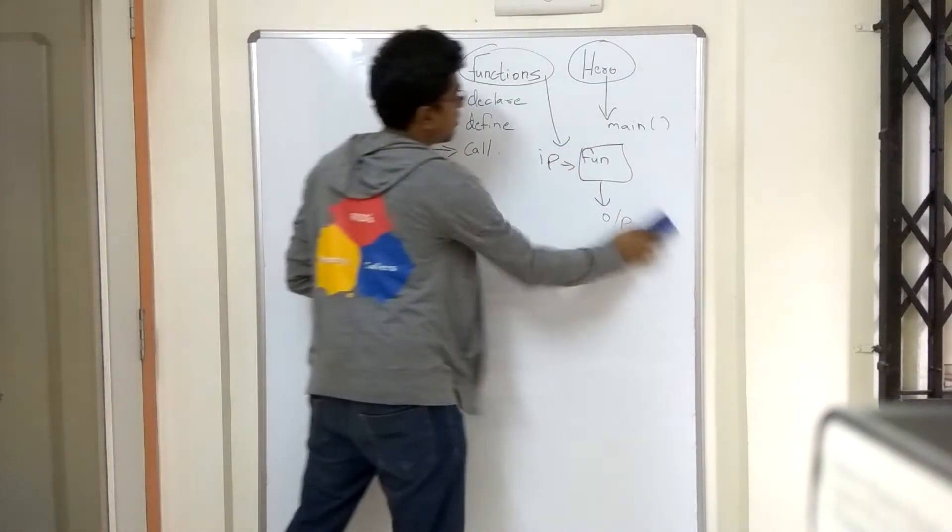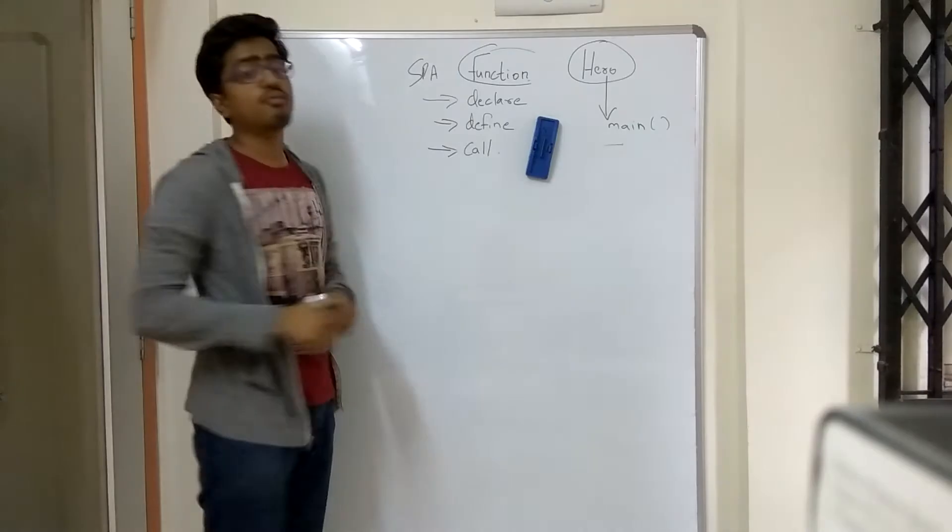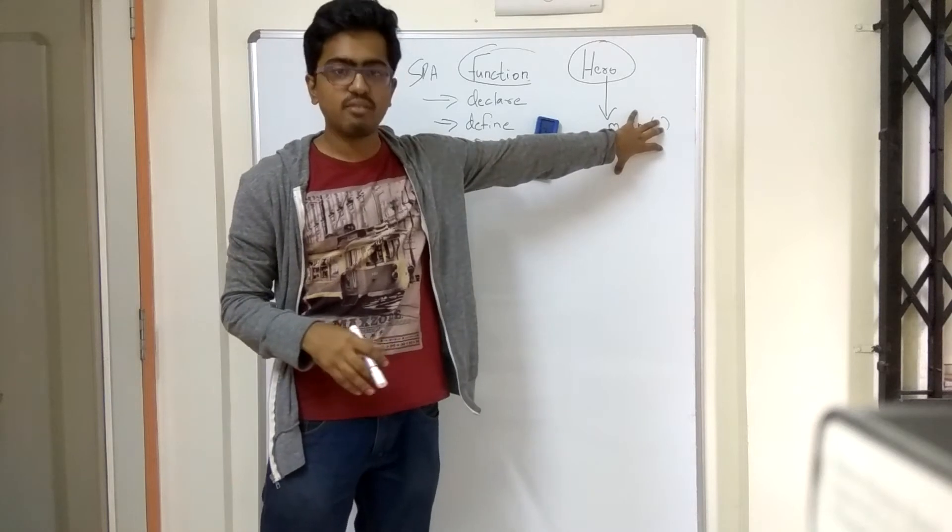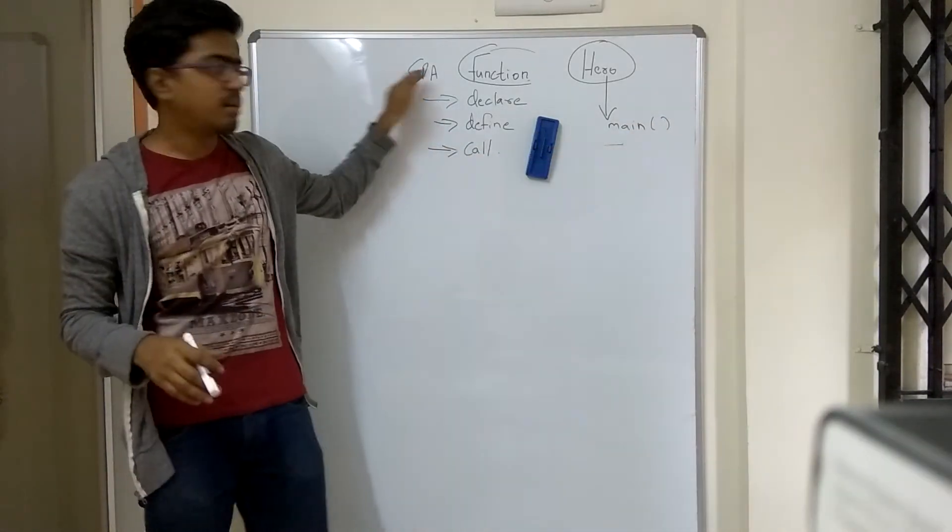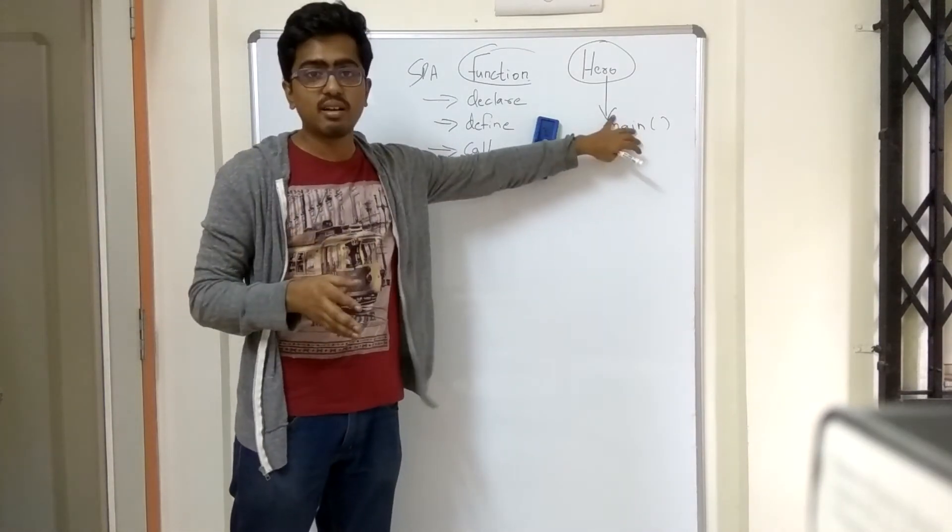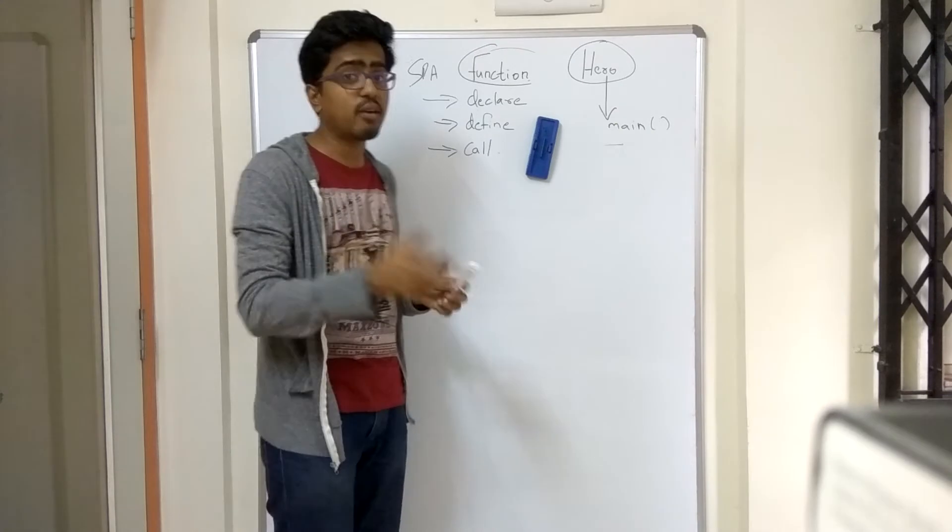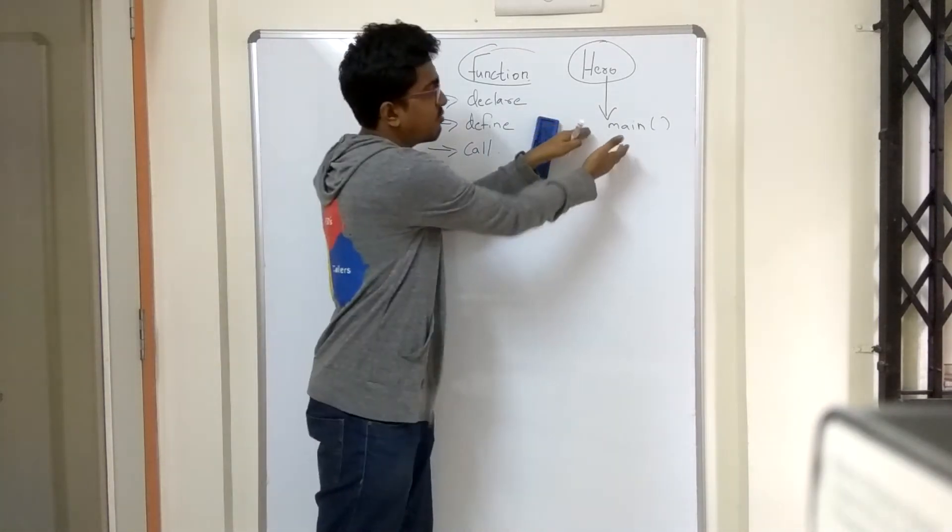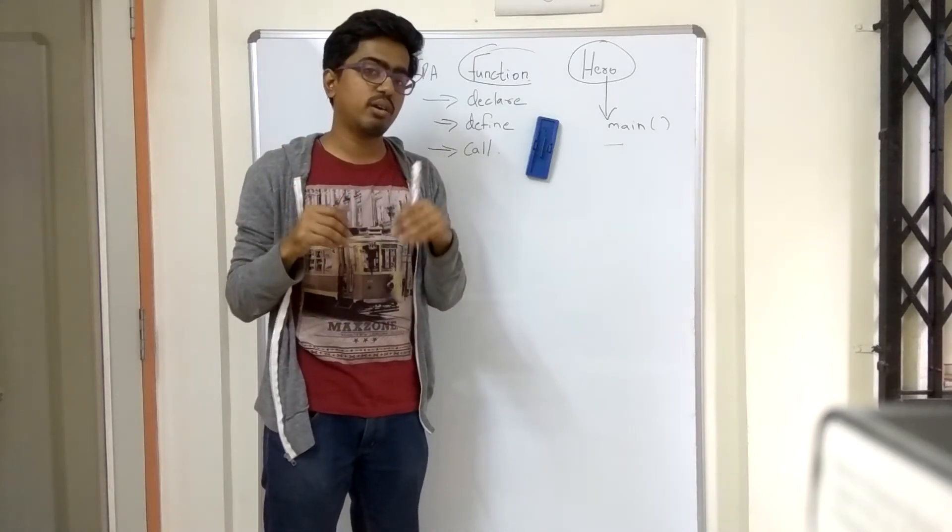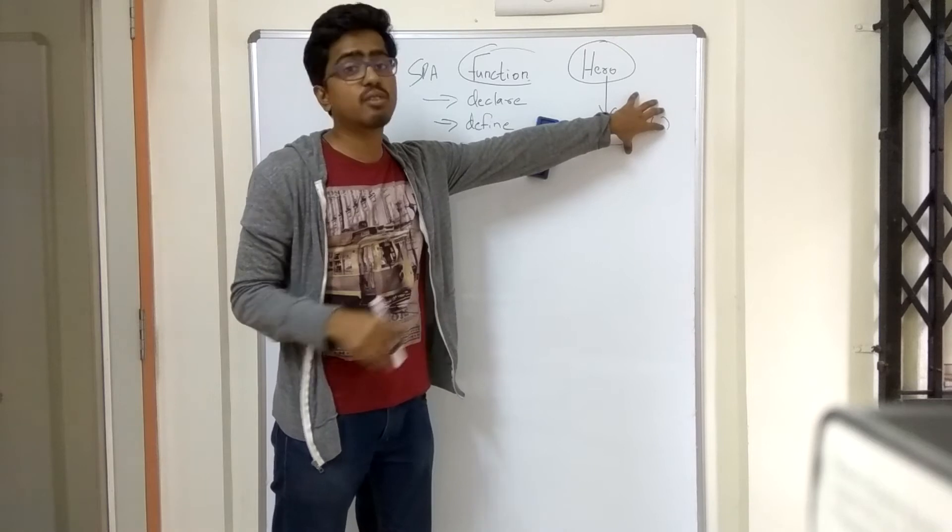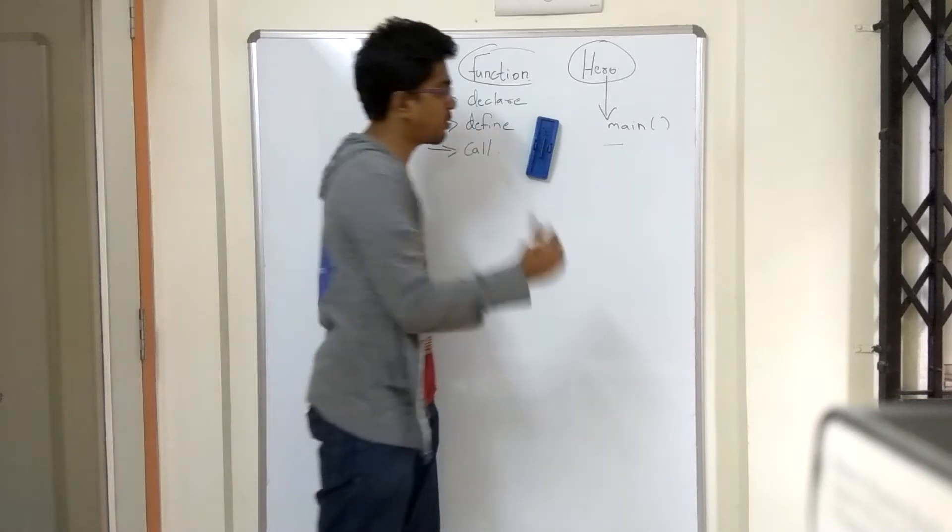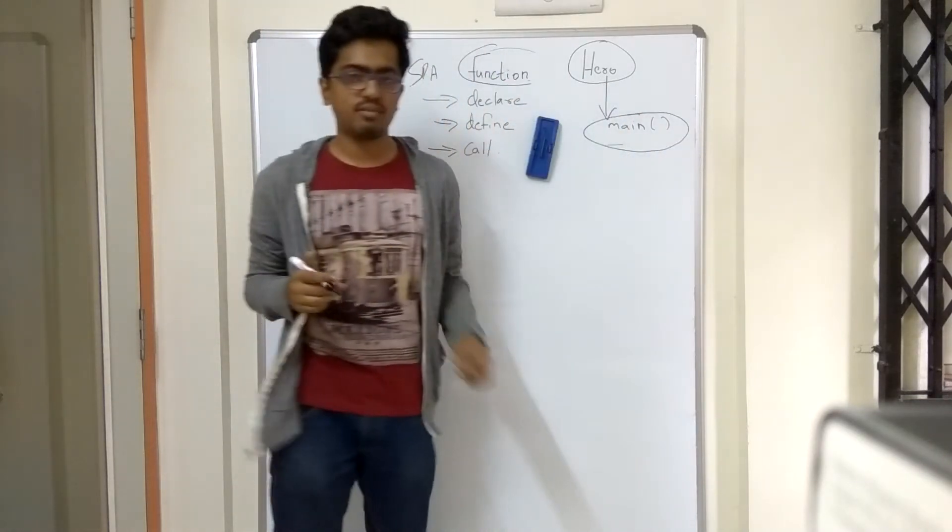Now looking at it from the point of view of C, the hero here is the main function. When you talk about C, the main function is the hero of every program. Uske bina picture chalu nahi, uske bina program nahi chalega. You know why? Because when you put this for execution, the first thing that the executor is going to look is, he is going to find the main function. Agar usko main function nahi mila, usko kya karna hai pata nahi. So every C program is going to contain this main function.